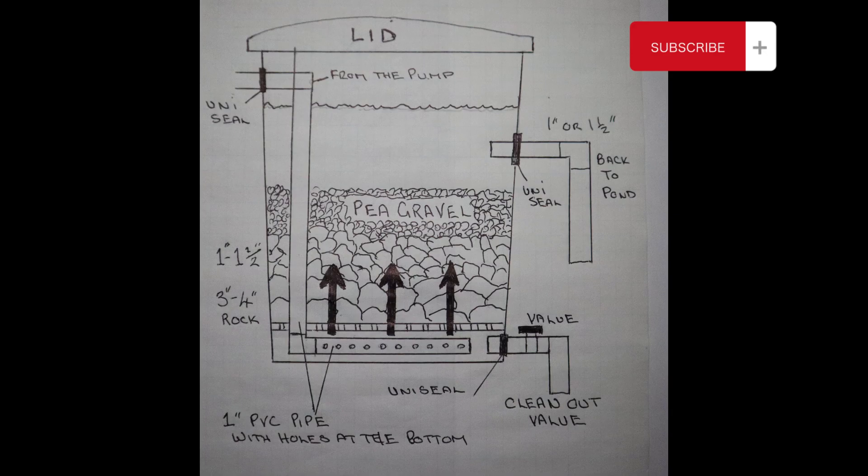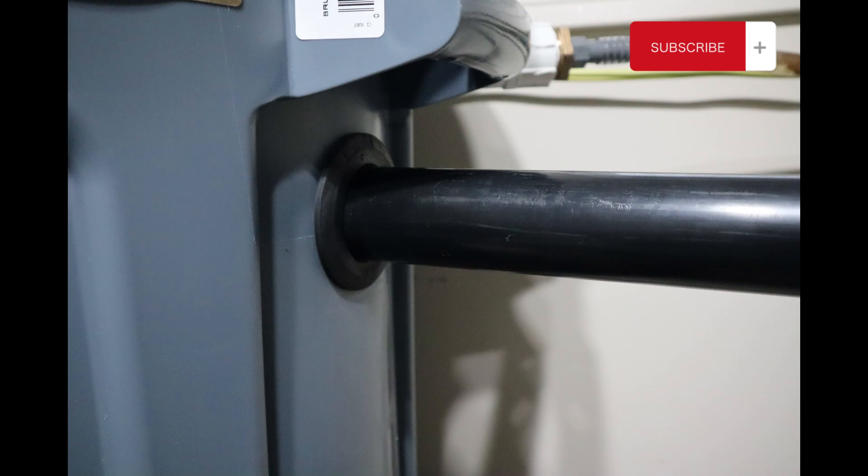Next I put 1 inch pipe in on the opposite side as an overflow. This goes back into the stock tank. Again I usually use 1 inch PVC but on my 400 gallon tank I used 1.5 inch because it was a bigger pump and so more flow.